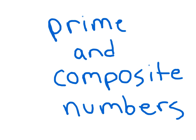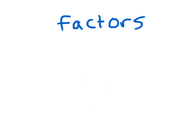Today we're going to take a look at prime and composite numbers. We've got prime and we've got composite numbers. To be able to understand what prime and composite numbers are, we're going to have to understand the term called factors and the factors of a number. Let's go ahead and write down some math facts here.